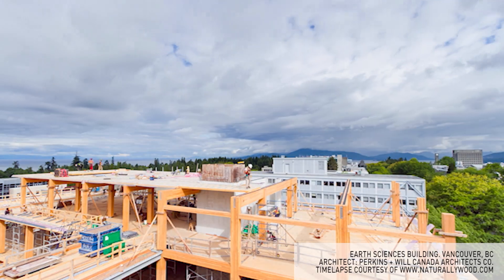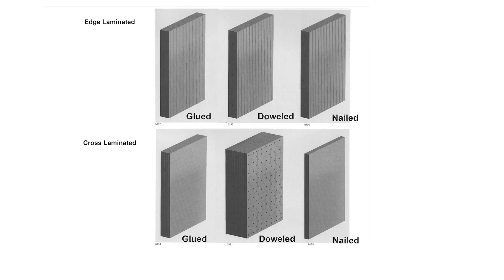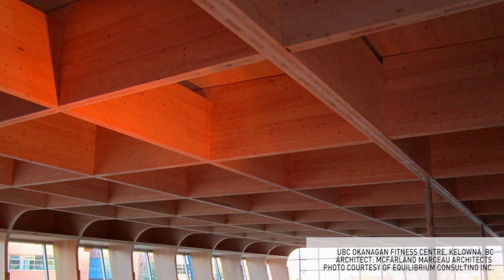There are different panel types available and CLT is one of them. Generally speaking, there are two different main types of panels: the edge laminated, meaning that we put the planks side by side, and the cross laminated, where we build layers with planks at 90 degrees to each other. Each of these categories can either be glued, nailed, or doweled, giving you six basic solid panel types.